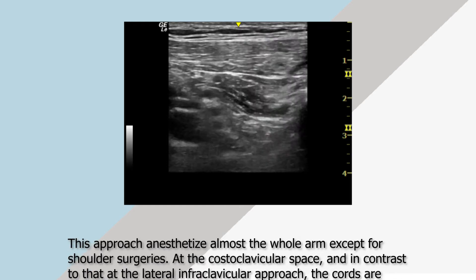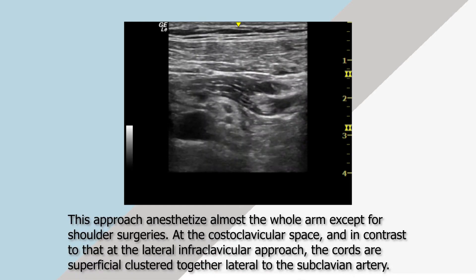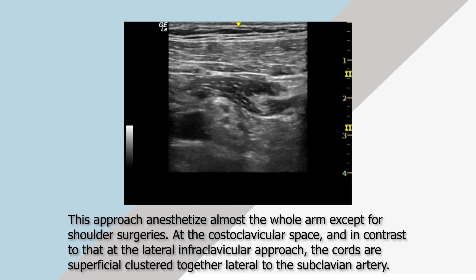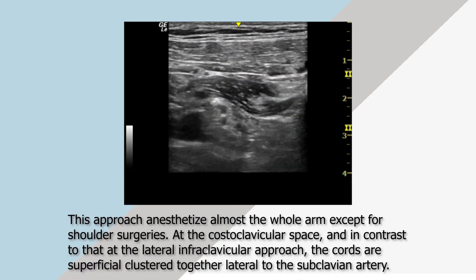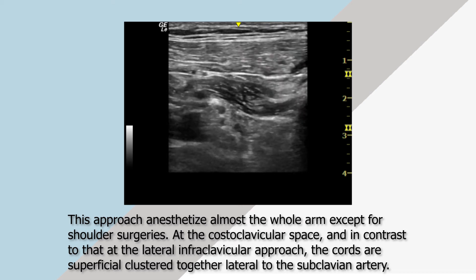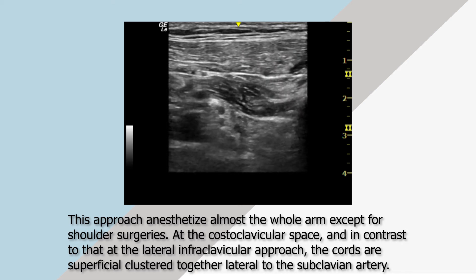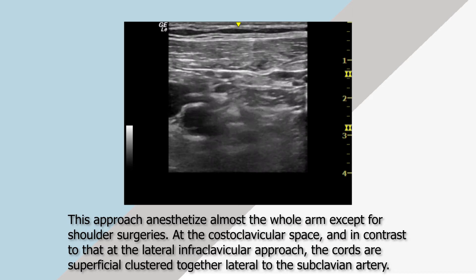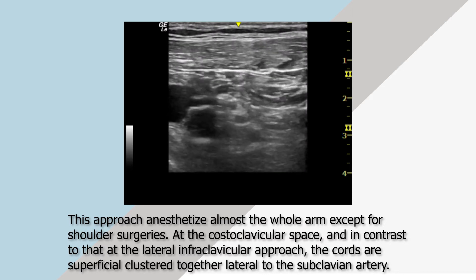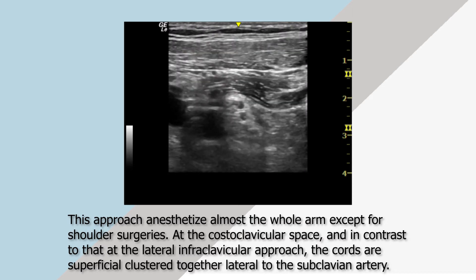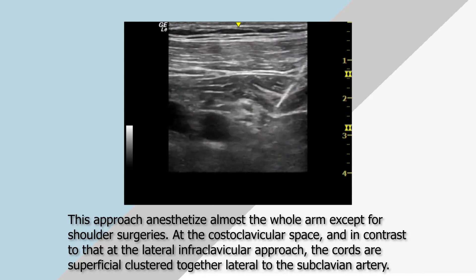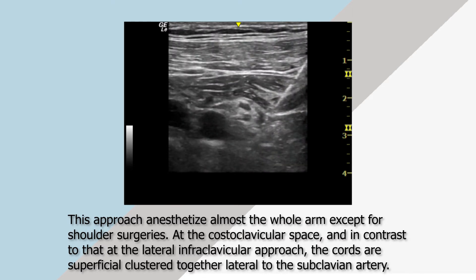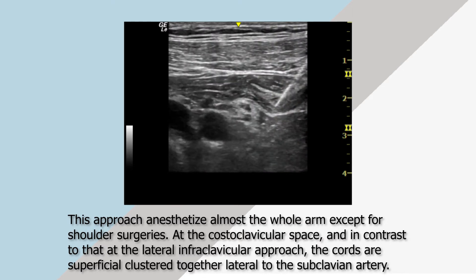This approach anesthetizes almost the whole arm except for shoulder surgeries. At the costoclavicular space, and in contrast to the lateral infraclavicular approach, the cords are superficial and clustered together lateral to the subclavian artery.